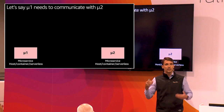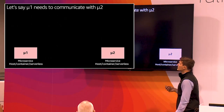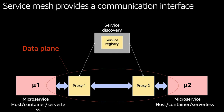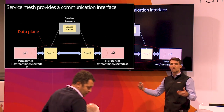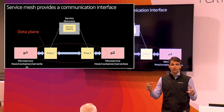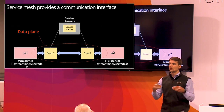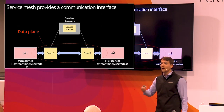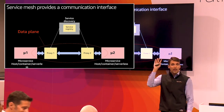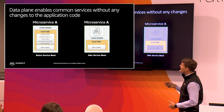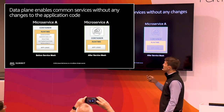Let's walk through an illustrative example. A microservice wants to speak with another microservice. Traditionally you could have them talk via IP address and domain name directly, but Service Mesh provides a communication interface between the microservices. The proxy is deployed as a sidecar alongside your microservices, deployed as a container, and these proxies allow for an interlay between your microservices, giving you out-of-the-box service discovery.